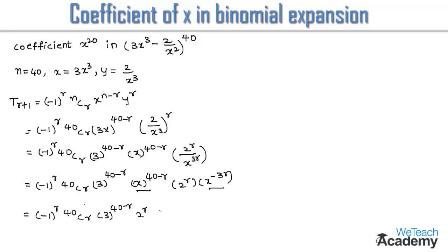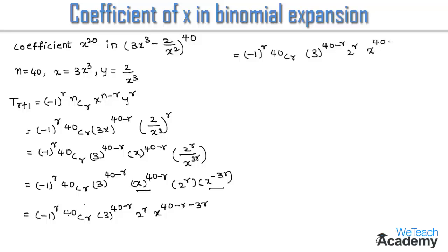By adding the powers of x we get x power (40 minus r minus 3r). So the general term becomes: minus 1 whole power r, into 40Cr, into 3 power (40 minus r), into 2 power r, into x power (40 minus 4r).